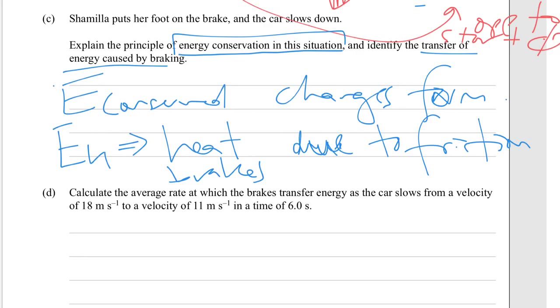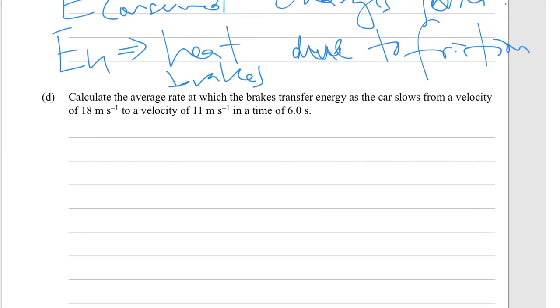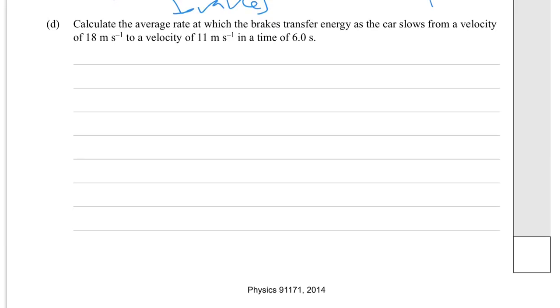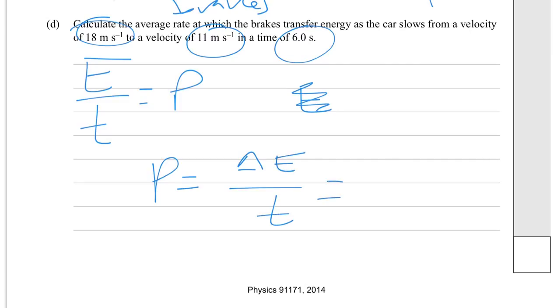D. Calculate the average rate at which the brakes transfer energy as the car slows from that velocity. So we're talking about the energy over time, which is the power. And we're going to have to calculate the kinetic energy. So the kinetic energy initially minus the final kinetic energy over that time. So if we were to write this as a full equation, the power will be the change of energy over the time, which is EK final minus the EK initial divided by the time.